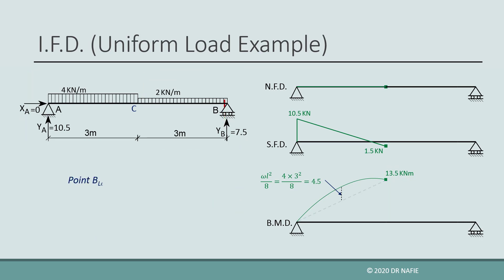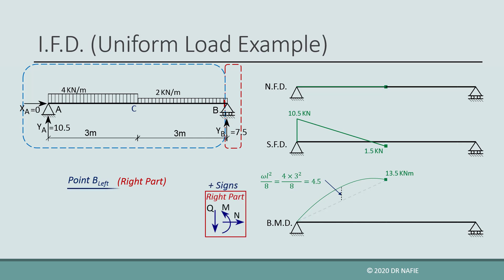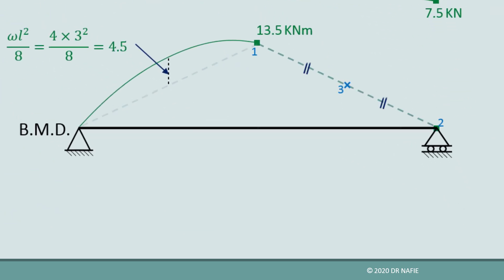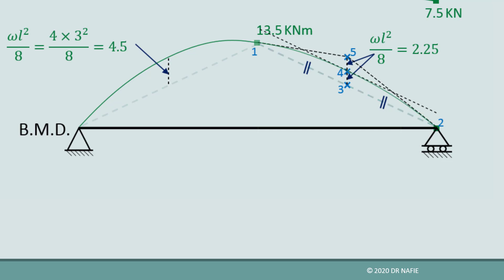Next, we move to the point on the left of the roller support at B. For this location, we will work on the right part, so we display the sign convention for the right part for reference. The normal force will be 0. Only one vertical force is present, which is the reaction YB with a value of 7.5 kN upwards, so the shear will be negative 7.5 kN because positive on the right side is downwards. The value of shear is drawn on the diagram at point B and connected to the value at point C with a straight line. The bending moment at point B will be 0 because all the forces in the right part pass through point B. Next, we connect the moment at point C with that at point B using a parabola in the same way as detailed previously between A and C. The value of WL² / 8 in this case will be 2 kNm × (3 m)² / 8, giving a value of 2.25 kNm.